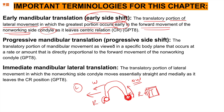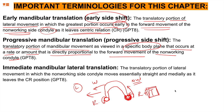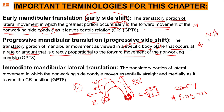Progressive mandibular translation, or progressive side shift: it is the translatory portion of the mandibular movement, as viewed in a specific body plane, that occurs at a rate or amount directly proportional to the forward movement of the non-working condyle. There are two types of translations — early and progressive. Initially the condyle moves, but when the mandible ends up at its final position, the translation that occurred surpasses its initial trajectory — that is progressive. The key concept to know is the behavior of the working versus non-working condyle.